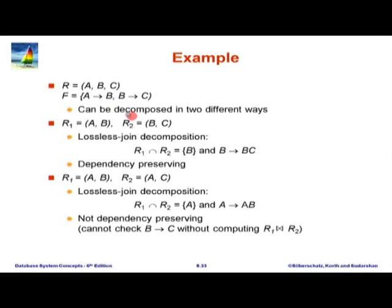Is the initial schema in BCNF? There is a functional dependency B→C where B is not a super key. This dependency is not trivial and B is not a super key — A is, but B is not. Therefore it is not in BCNF and we have to decompose. Both decompositions are actually in BCNF, but the first one is also dependency preserving while the second is not. What we would like is a BCNF decomposition which is also dependency preserving. Later we will see this is not always possible.